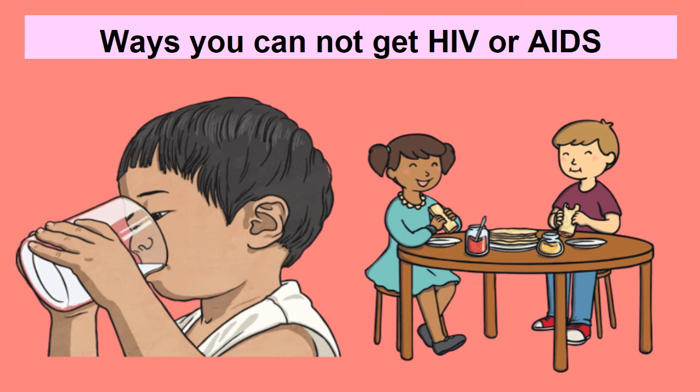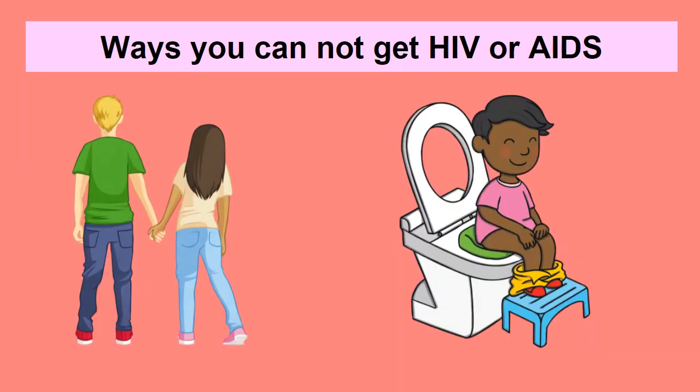Now let's look at ways you cannot get HIV and AIDS. By using a cup or glass that someone drank out of before — no, you cannot get it. By sharing lunch with a person who has it — no, you cannot get it. Holding hands with a person — you cannot get it. Sitting on a toilet seat — you cannot get it.